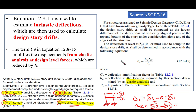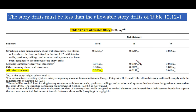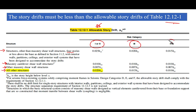The allowable story drift table 12.12-1 categorizes buildings — four stories or fewer with certain partitions, masonry cantilever shear wall structures, other masonry shear walls, and other structures — by risk category. For risk categories 1 and 2, limits are 0.025H; for categories 3 and 4, they are 0.010H, where H is the story height.